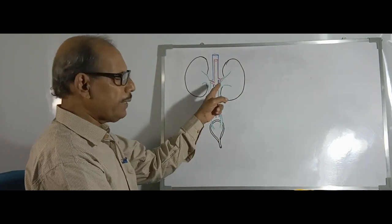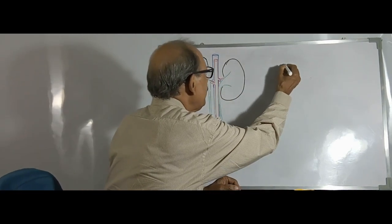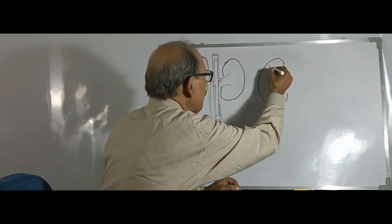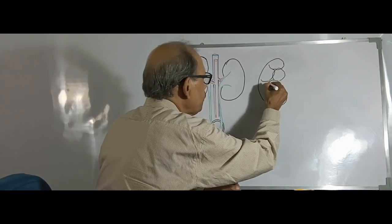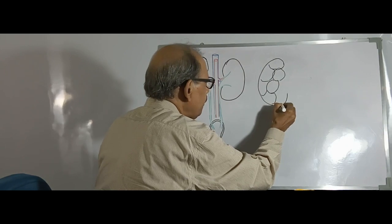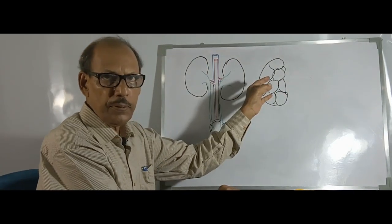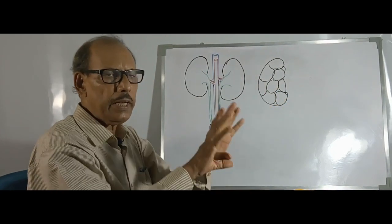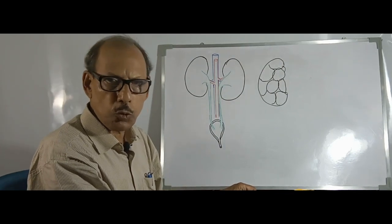In some mammals, these kidneys are lobulated in appearance due to the presence of certain grooves in between the lobes. Whatever may be the shape — smooth-surfaced or lobulated — they are encapsulated by a thick fibrous capsule.